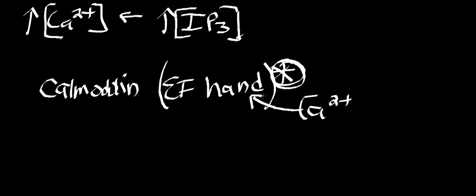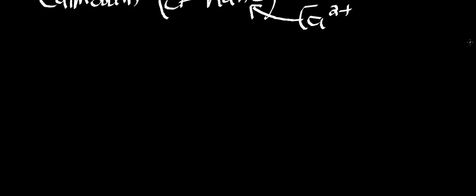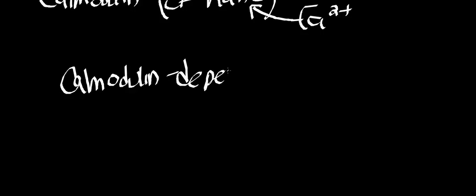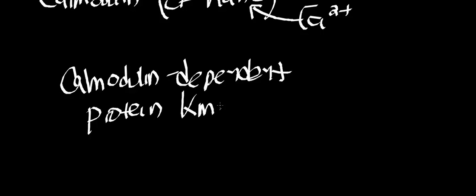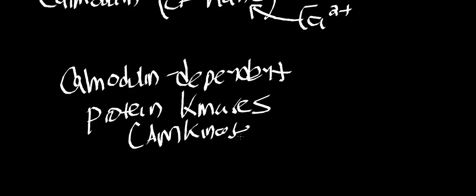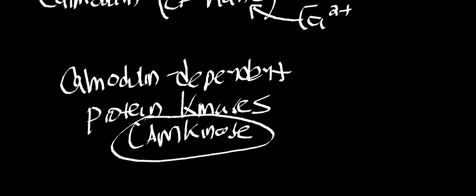Calmodulin itself is an integral part of another very important calcium-binding protein kinase called calmodulin-dependent protein kinase — usually just abbreviated cam kinase. These are a class of enzymes, and this is how we'll refer to them. Calmodulin-dependent protein kinases are basically doing the same thing that protein kinase A does: they're phosphorylating target proteins.